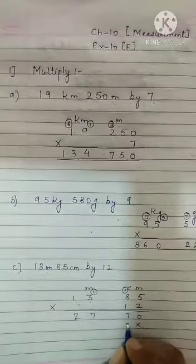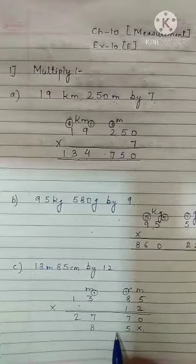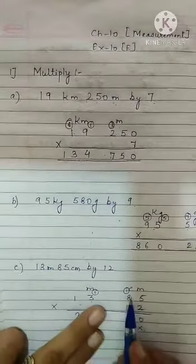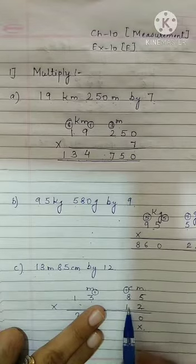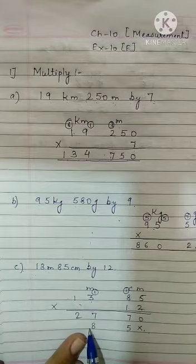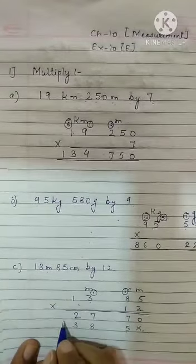1 five is 5. 1 eight is 8. We will not write 8 over here. Don't think that 1 eight is 8 will come here. No. There is no place. 1 eight is 8 will come over here. 1 three is 3. And 1 one is 1.